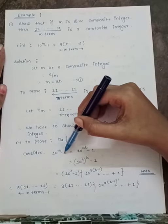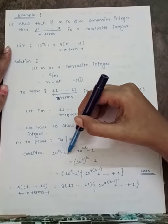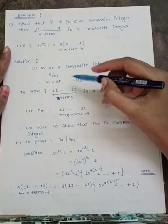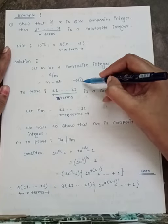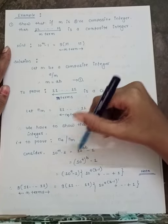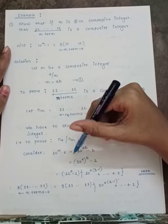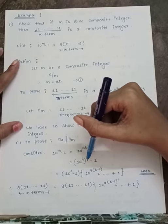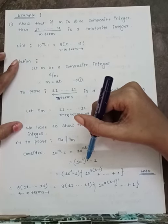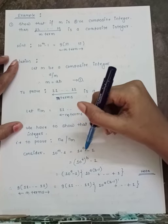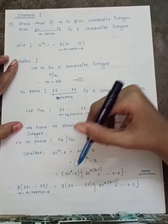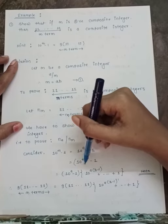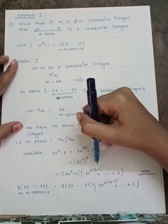By equation 1, m = ab. Using laws of indices: 10^m − 1 = 10^(ab) − 1 = (10^a)^b − 1. Applying the algebraic series factorization: 10^(ab) − 1 = (10^a − 1)·(10^(a(b−1)) + … + 1).